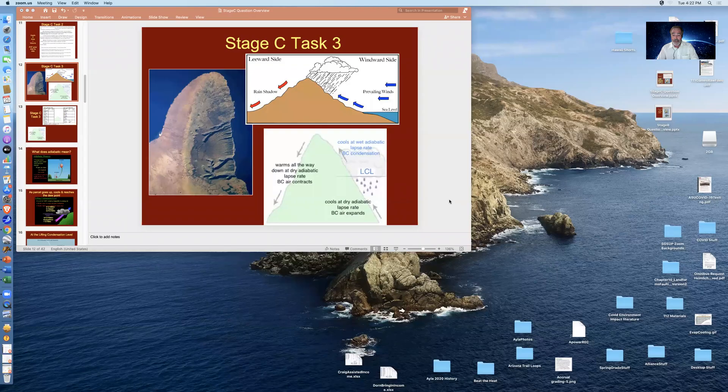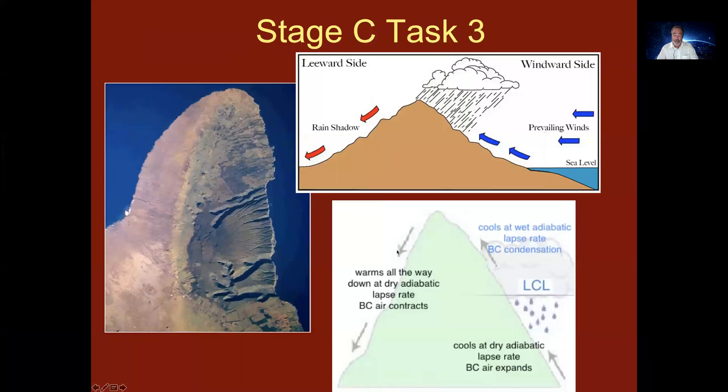Hi, my name is Ron Dorn and the purpose of this presentation is to explain to you stage C of the Hawaii lab task number three about the rain shadow on Kohala volcano. I'll start sharing screen and see if I can do my best to explain this to you using a PowerPoint that I prepared.